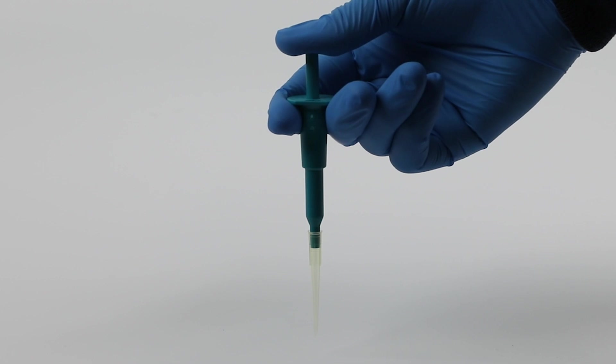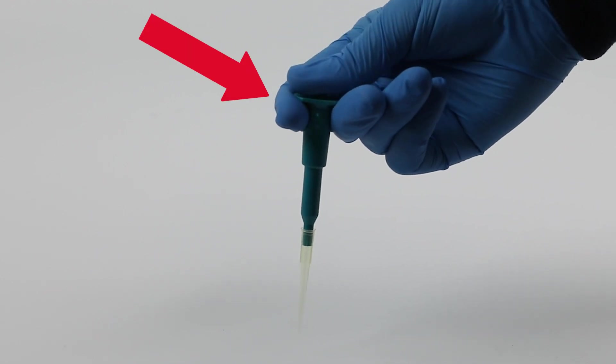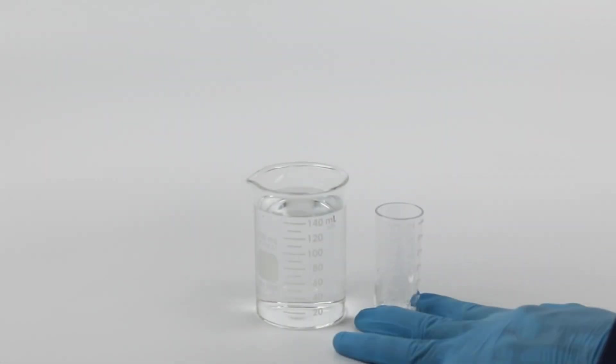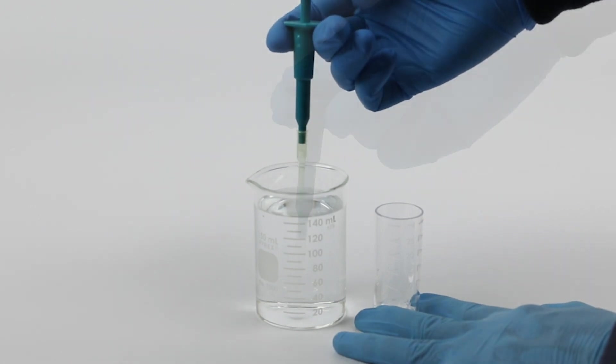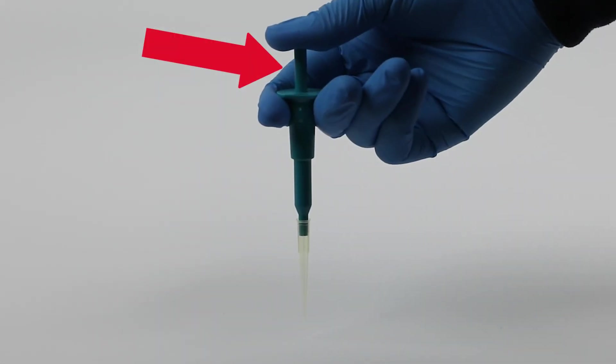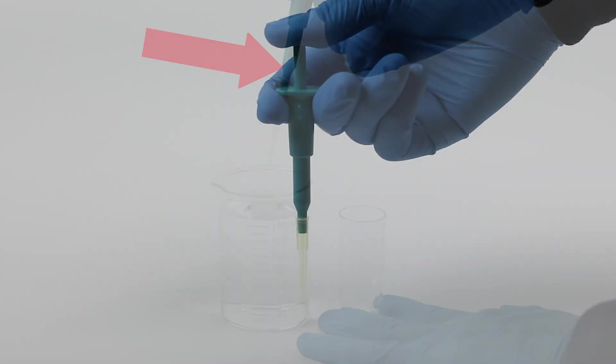To obtain a precise aliquot of your sample, depress the plunger at the top of the mini-pet and immerse the tip in the sample to be tested, then release the plunger. Releasing the plunger will draw a precise portion of the sample into the tip.